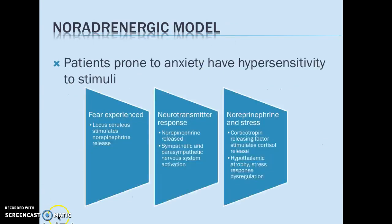Looking more into the norepinephrine model, this is the essential theory as to what is experienced when someone prone to anxiety is being stimulated by norepinephrine. If an individual experiences fear, that activates the locus coeruleus, which stimulates the release of norepinephrine. Once norepinephrine is released, the sympathetic and parasympathetic nervous system respond. Following that stress response, we see the release of corticotropin-releasing factor, which stimulates cortisol release. Cortisol is closely associated with atrophy of the hypothalamus, and over time the stress response becomes hypersensitive and dysregulated, which can lead to chronic anxiety.